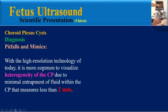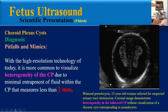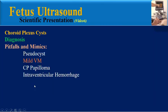With the high-resolution technology of today, it is more common to visualize heterogeneity of the choroid plexus due to minimal entrapment of fluid within the choroid plexus that measures less than 2 mm. This coronal ultrasound image demonstrates heterogeneity in the bilateral choroid plexus without visualization of a discrete cyst, corresponding to pseudocysts.